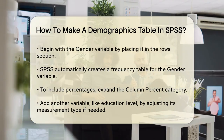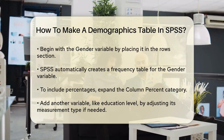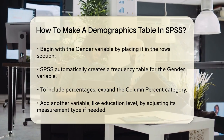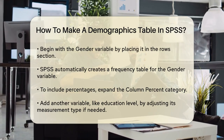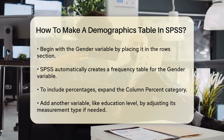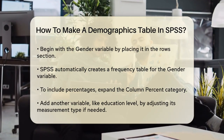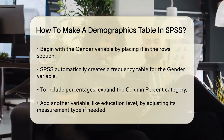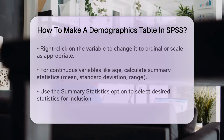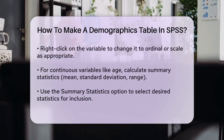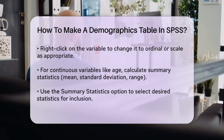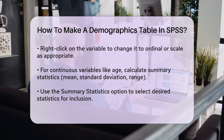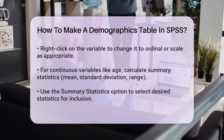Next, you might want to add another variable such as education level. However, education level might be an ordinal or scale variable, so you need to adjust its measurement level. Right-click the variable in the list, change its measurement type to ordinal or scale as appropriate, and then drag it into your table.